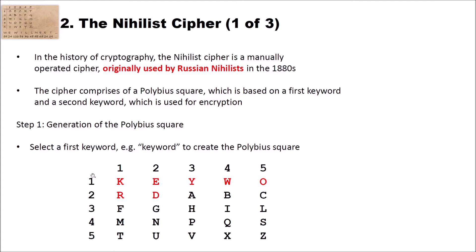So we have in total 25 letters in the Polybius square, which means I and J share the same cell — in this case, the I. This gives us a 5-by-5 square indexed by row and column numbers 1 through 5.